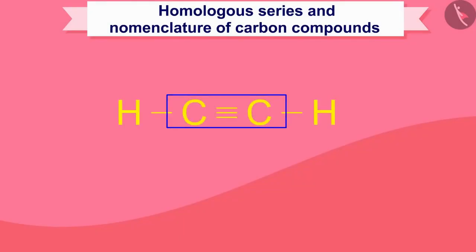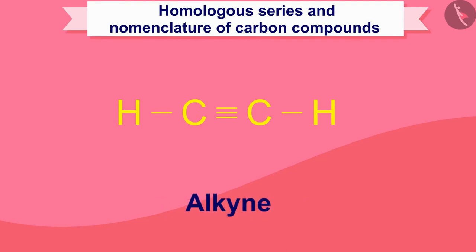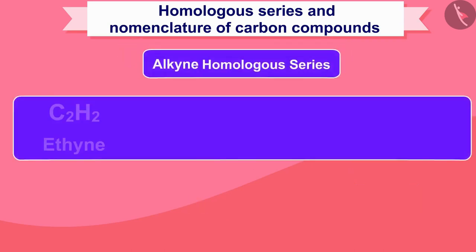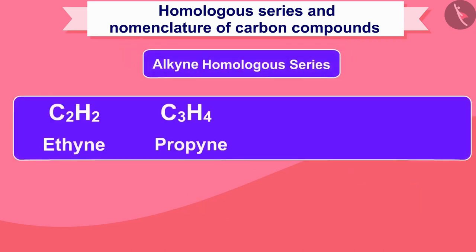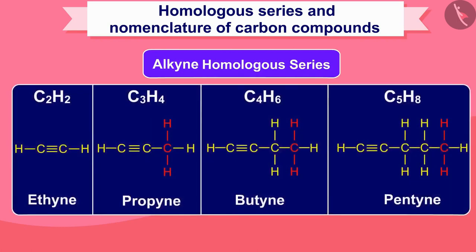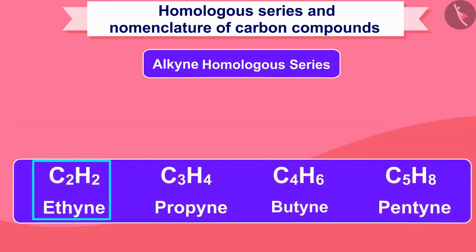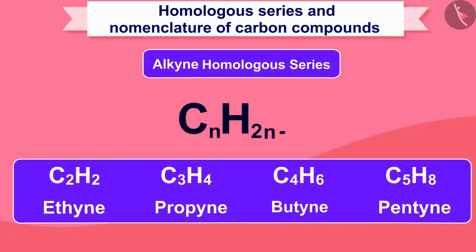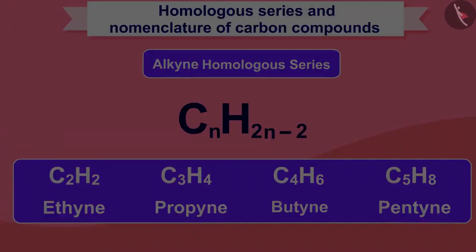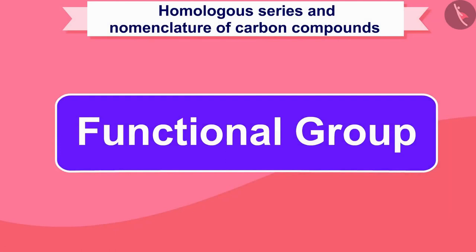Similarly, if the hydrocarbon compound contains a carbon-carbon triple bond, the series will be called alkyne. The name will end with 'yne', and the same important thing is that there will be a difference of CH2 unit in moving from one unit to another. We can show any compound in this carbon series by the formula CnH2n-2.